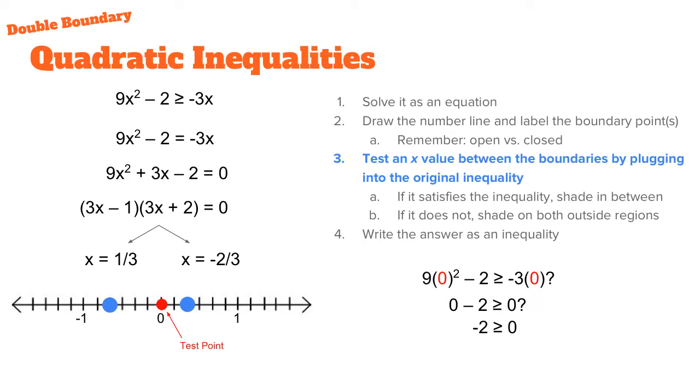I plug it back into the very original inequality statement, not any of the work that you've done after that, but the original statement. And so we have 9(0)² minus 2 and to check, is it actually greater than or equal to negative 3 times 0. As you simplify, 0 squared times 9 is 0 and that minus 2 is negative 2. So this statement says that negative 2 is greater than or equal to 0 at that particular test point.